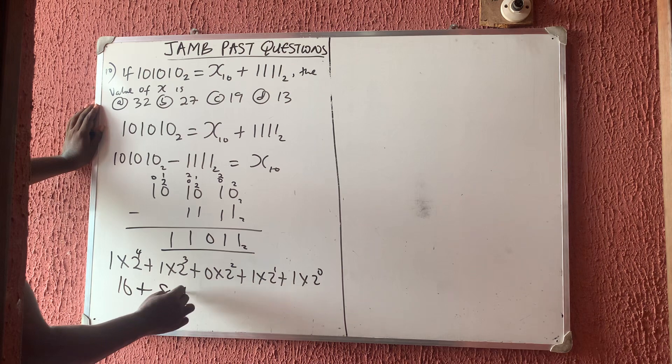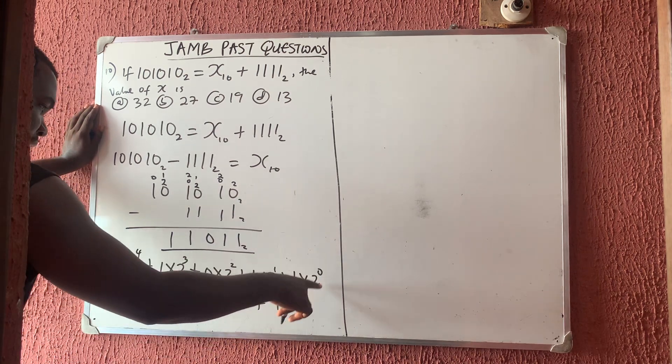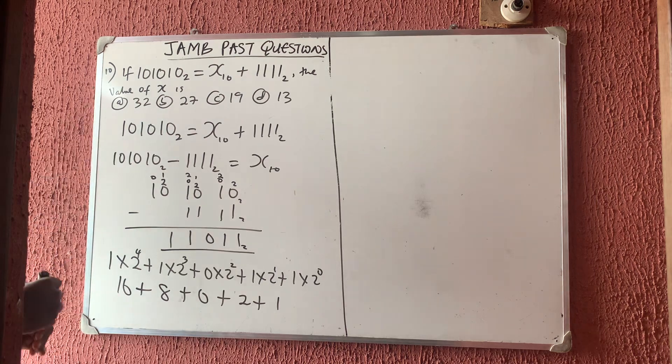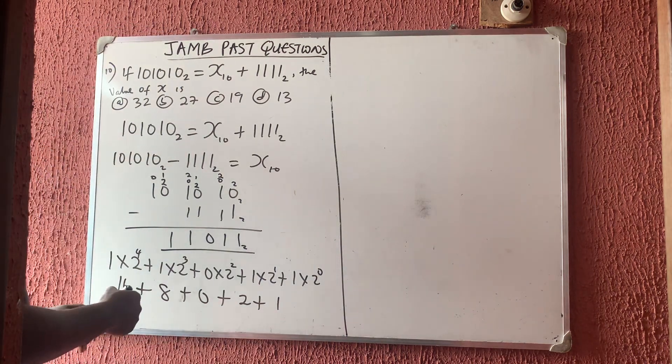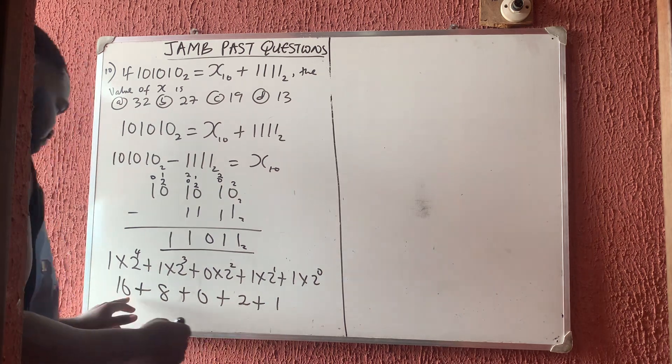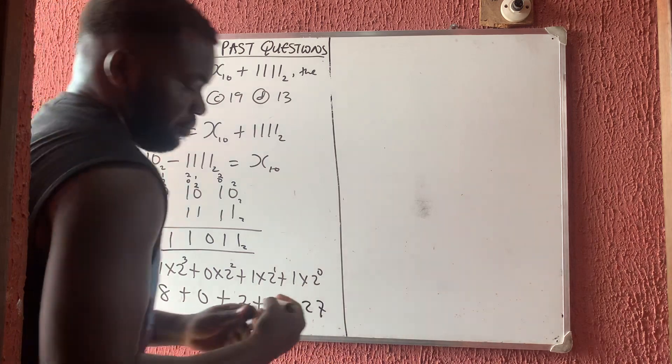Is 16 plus 8 plus 0 plus 2 plus 1. So I have 16, this is 10, 20, this is 10, 26, 27. Option B is very, very correct. 27, bye bye.